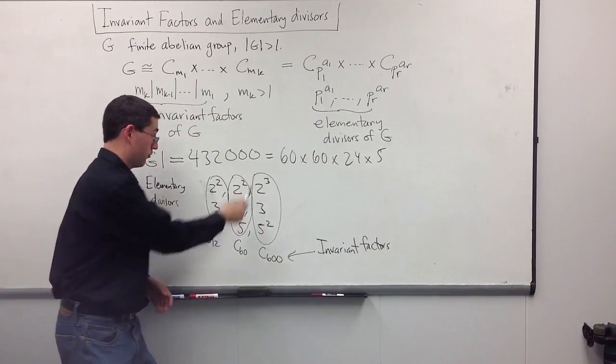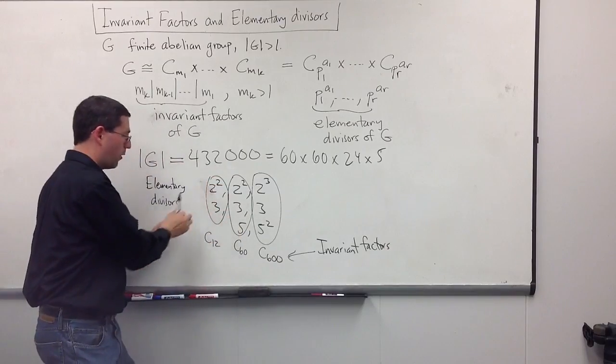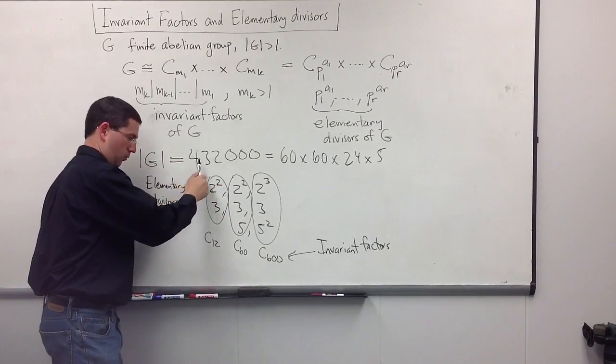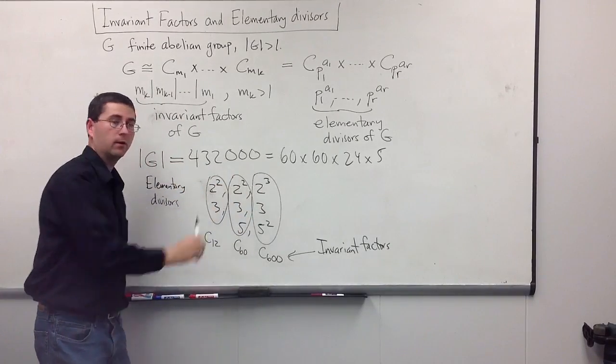If you have your invariant factors, just write them down in this way, always pushing everything to the right if you have to, and read them across. You have all of your elementary divisors. Thanks.